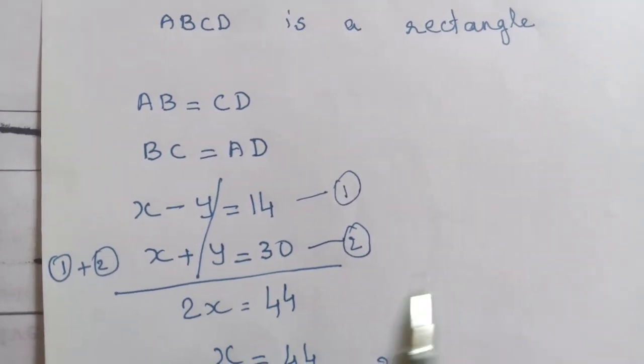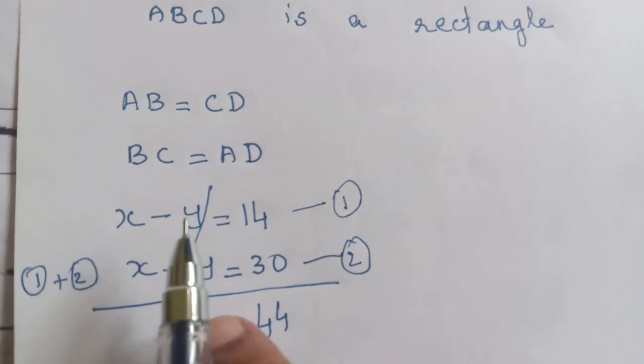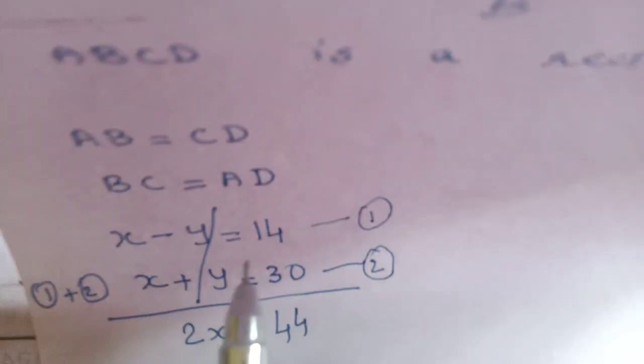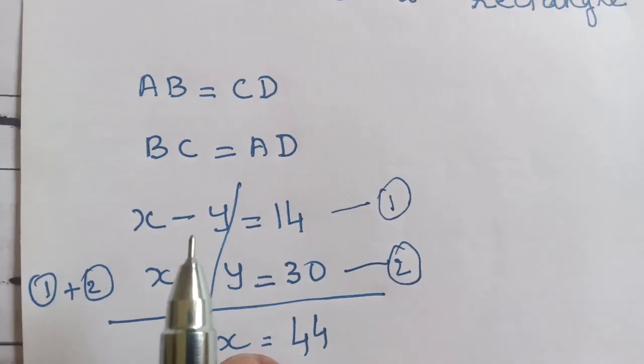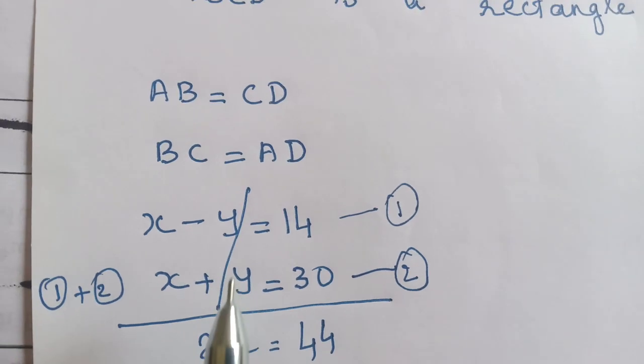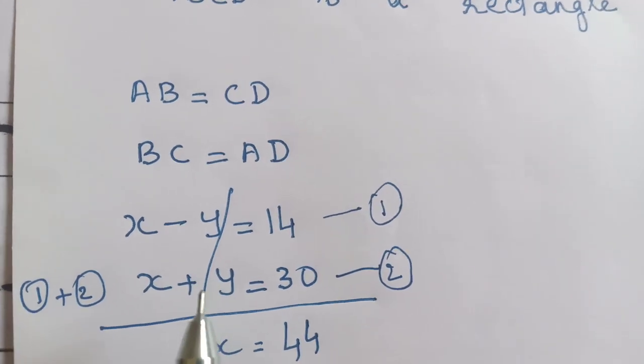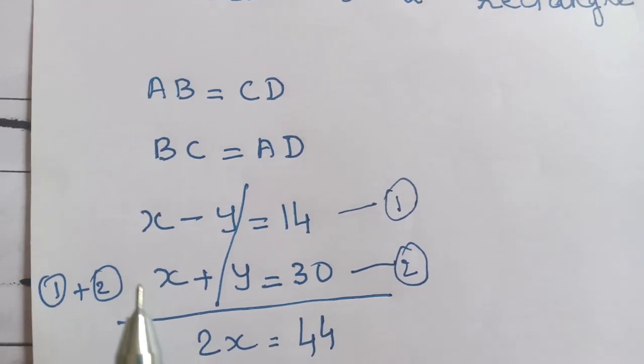Draw a line, then add equations 1 and 2. Check if there's plus or minus - we have minus y and plus y, so we add the two equations. That's the common approach.